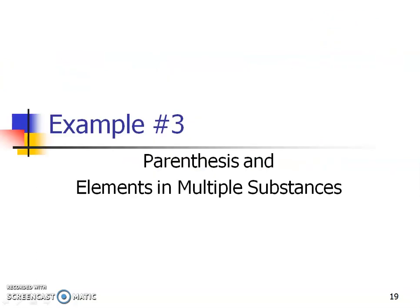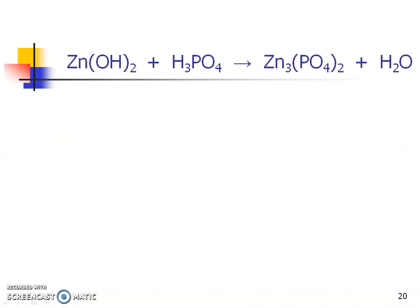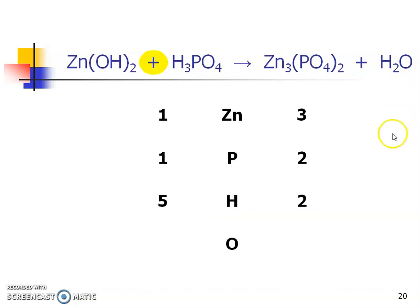Now we're going to deal with parentheses and elements in multiple substances. Pull out your elements: zinc, then phosphorus first, then hydrogen, then oxygen. Pause and try to come up with the correct amounts of each. For zinc — pretty easy. Phosphorus — pretty easy. Hydrogen — not so much. I see hydrogen in two places, so two times one plus three gives me five total on the left, and two on the right. Oxygen also appears in two places: two plus four gives six total on the left, and eight plus one gives nine total on the right. Those are the initial element counts on both sides.